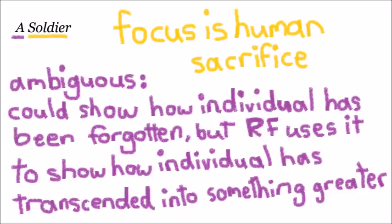Starting with the title, 'A Soldier' — this immediately establishes the poem is about the sacrifice of a soldier rather than the broad concept of war. 'A soldier' is quite ambiguous, not 'the soldier.' It could refer to any soldier, and I think that's deliberate. Our first impression might be that this soldier has been forgotten, disregarded as just another weapon. However, Frost uses this ambiguity to supersize the soldier into something larger than the individual, so that his sacrifice is more important than the war in which it took place — and that all soldiers' sacrifice is more important than the wars they were in.